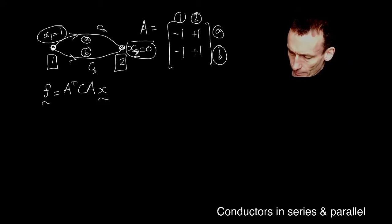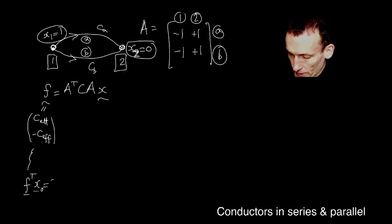Now, if that's the case, then this thing will be by definition CEF. And we know that it's got to be minus CEF. We know that, by the way, because we know that F transpose X naught has to be zero, where X naught is this right null vector, which is very clear that this is a right null vector of A.